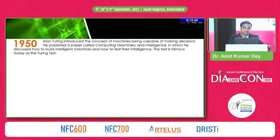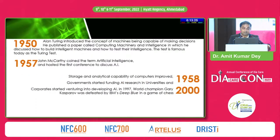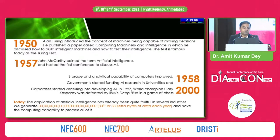Looking at the history, it started in 1950 when Alan Turing introduced the concept of machines being capable of making decisions in his paper 'Computing, Machinery and Intelligence.' In 1957, John McCarthy coined the term artificial intelligence and hosted the first conference. Since 1958 through 2000, storage and analytical capability improved, governments funded AI research, and corporates ventured into AI. In 1997, world champion Gary Kasparov was defeated by IBM's Deep Blue in chess. Today we generate about 33 zettabytes of data each year and have the computing ability to process all of it.